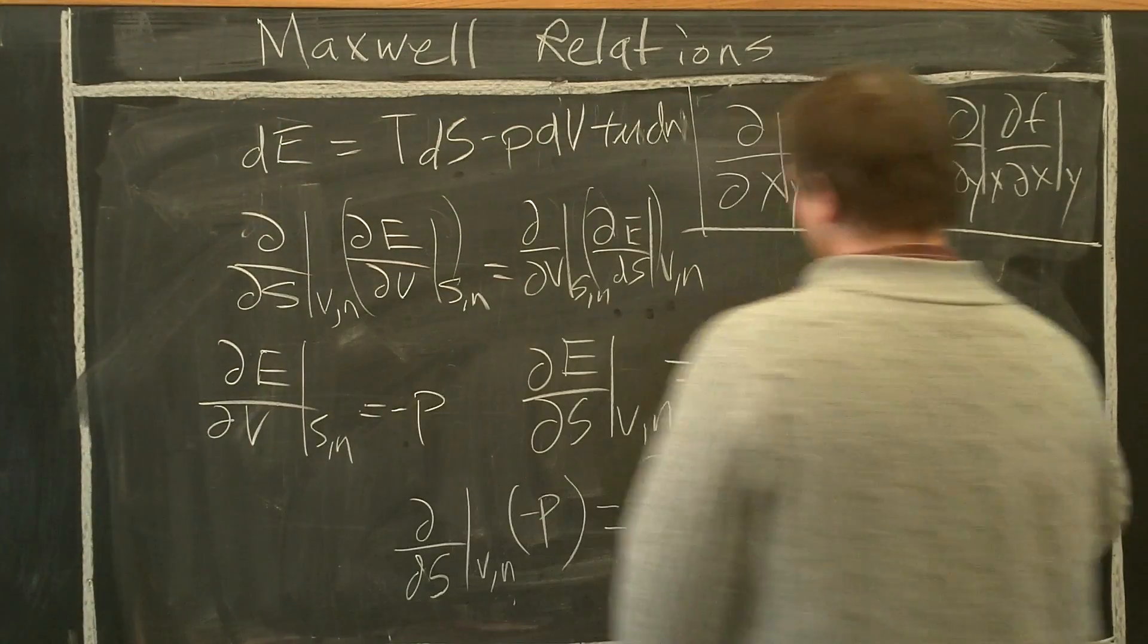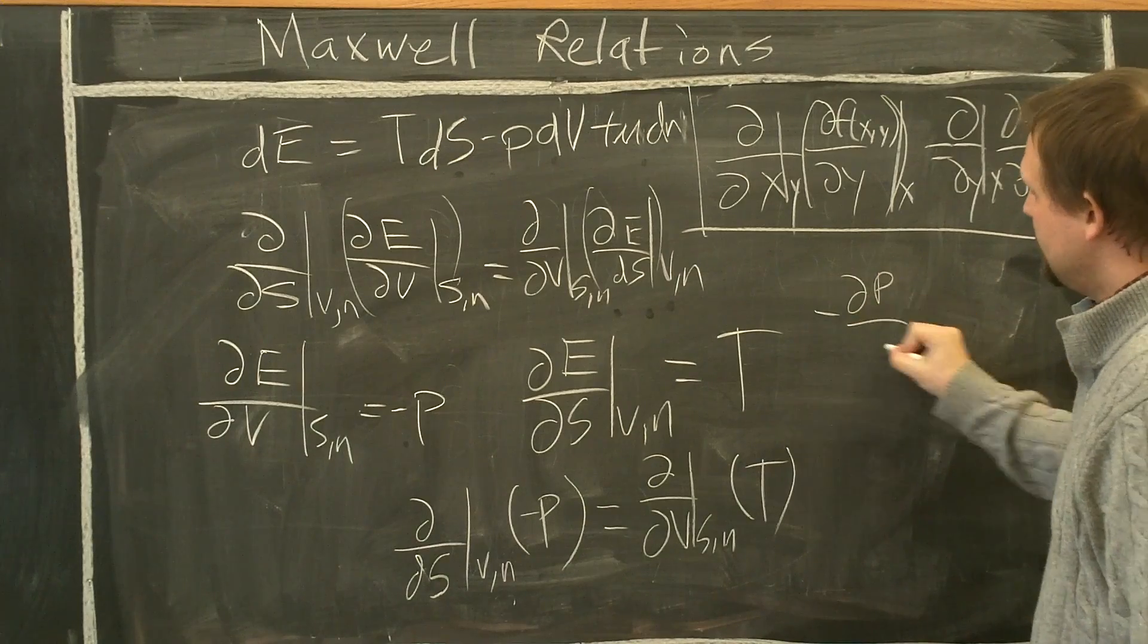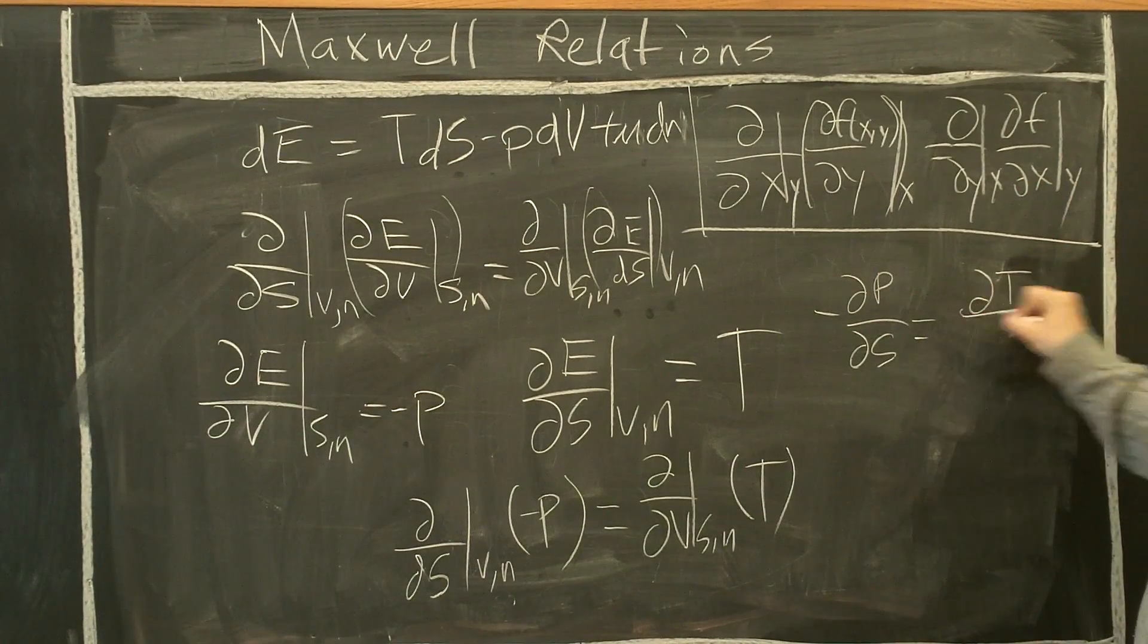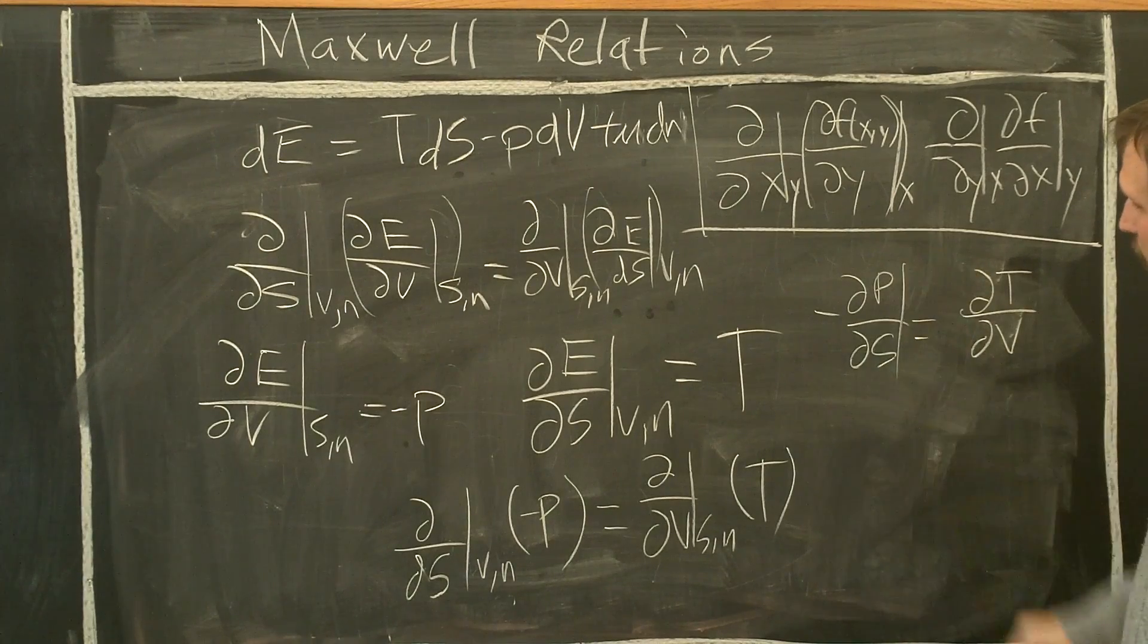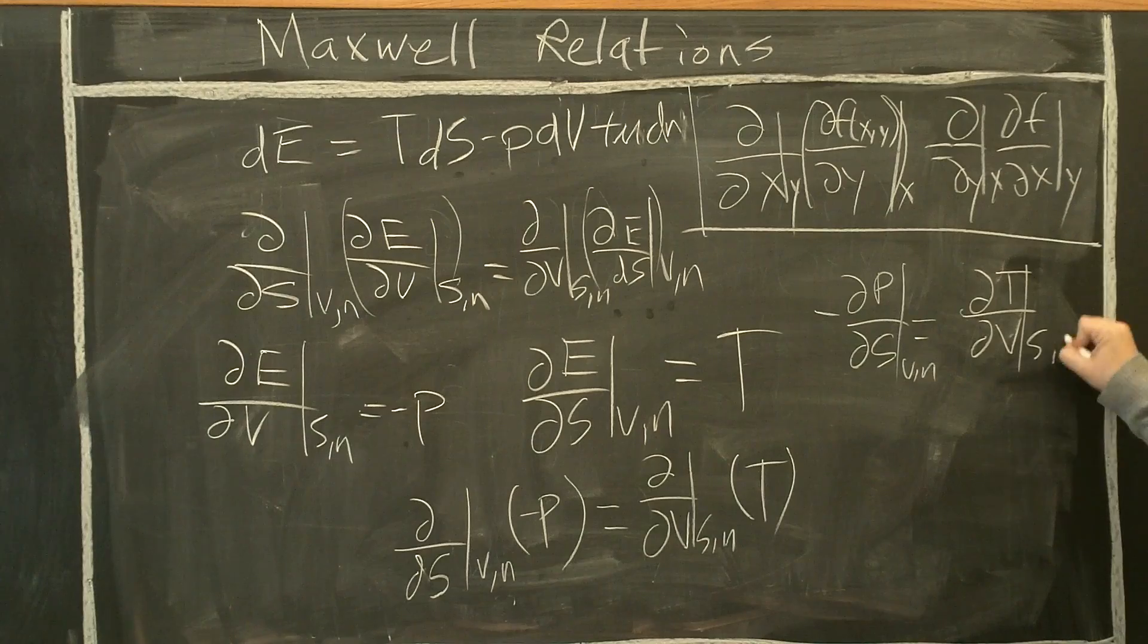Again, we write this in more compact form right here. We have -∂P/∂S equals ∂T/∂V. Of course, this is with respect to constant V and N, and with respect to constant S and N.